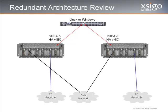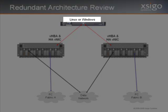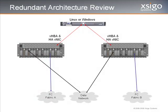Let's review redundant architecture details assuming we are using two SEGO-IO directors. First, we start with Linux and Windows hosts. For redundant data paths to physical network resources, we can use the H-AVNIC. For redundant data paths to storage resources, we use multiple VHBAs, then rely on storage management software with multipath capabilities to manage those paths.